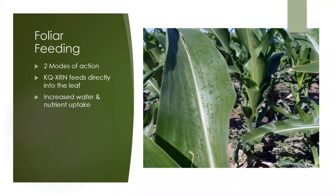Now this is critical to understand how this works, so let's go over it again. When we foliar feed with our Kugler XRN based products, there are two modes of action taking place. One, because of the design of XRN, some nutrients will feed directly into the leaf through the polar cuticular pores. And two, perhaps more important to understand, is that when we foliar feed, it's not the amount of nutrients that we're putting on the leaf — for example, we might only be putting three pounds of nitrogen on an acre — but it's how those nutrients increase the chlorophyll production and photosynthesis to make the leaves bigger and greener to collect more sunlight, which gets the plants to uptake more water and nutrients in the soil through the roots.